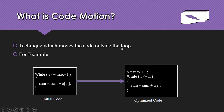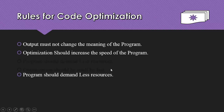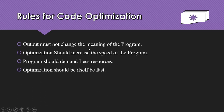In the code motion example, we move the code outside of the loop. We take a variable n and compute the value of max plus one outside of the loop, then call this variable inside. This is the initial code and this is the optimized code — we move the code outside of the loop.